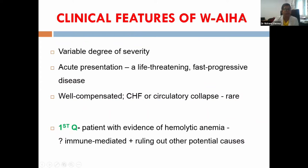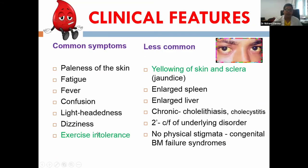Warm AIHA can have variable severity — some cases present acutely with life-threatening rapidly progressive anemia, but in the majority it is well compensated. Common symptoms relate to anemia: pallor, fatigue, confusion, lightheadedness, dizziness, exercise intolerance, and fever due to a hypermetabolic state. Less common features include yellowing of skin and sclera, enlarged spleen and liver. Chronic cases may develop cholelithiasis and cholecystitis.